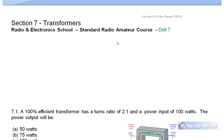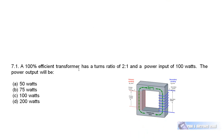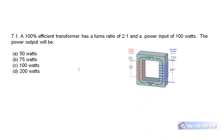Question 7.1: A 100% efficient transformer has a turns ratio of 2 to 1 and a power output of 100 watts. The 2 to 1 turns ratio is a red herring — the power into a transformer equals the power out, less losses. Since this transformer is 100% efficient it has no losses, so the power input is also 100 watts.